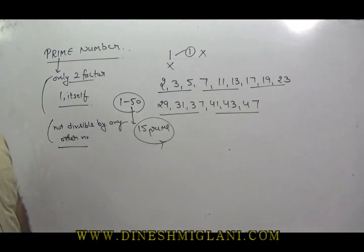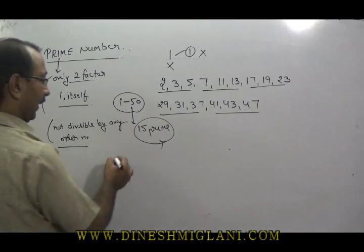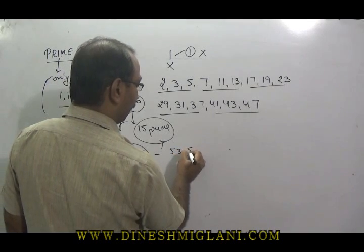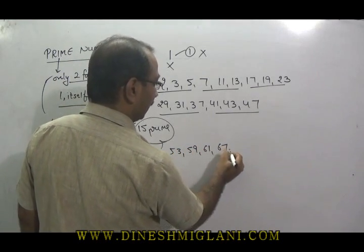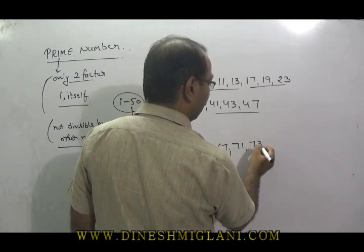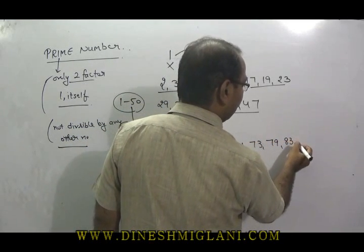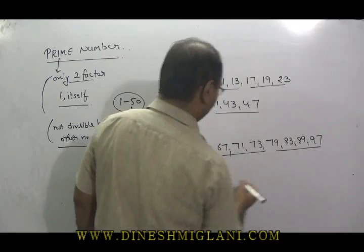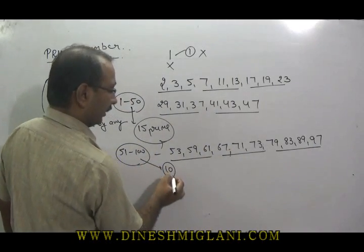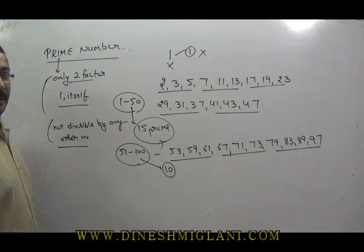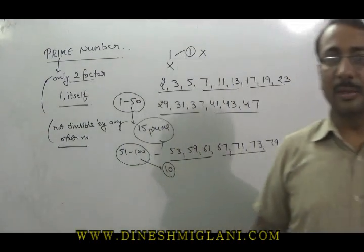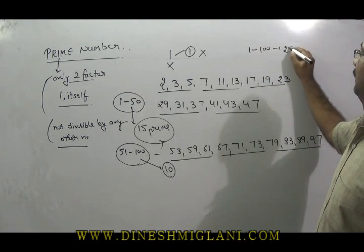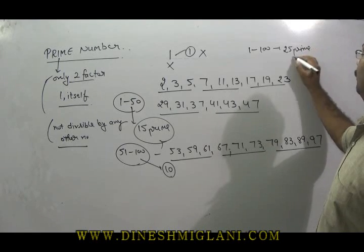From 1 to 50, how many prime numbers are there? 15. Similarly, from 51 to 100, the primes are: 53, 59, 61, 67, 71, 73, 79, 83, 89, and 97. Counting them: 3, 6, and 4 — that is 10. So from 51 to 100 there are 10 prime numbers. Finally, from 1 to 100 there are 25 prime numbers.